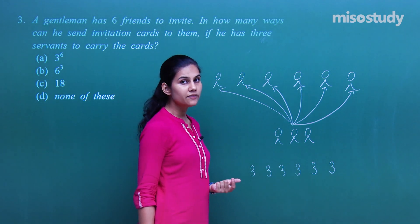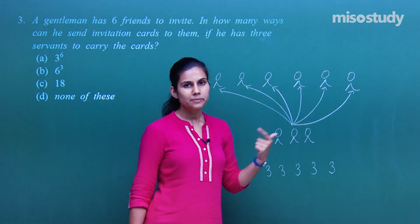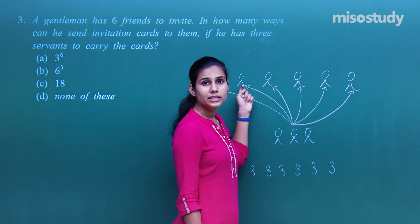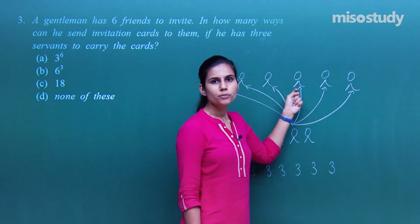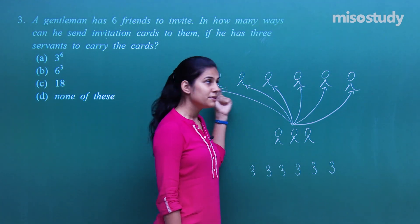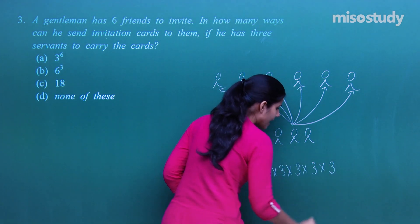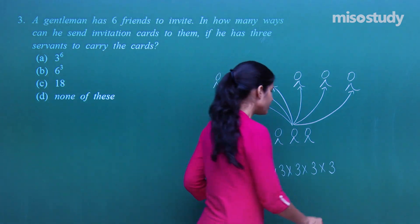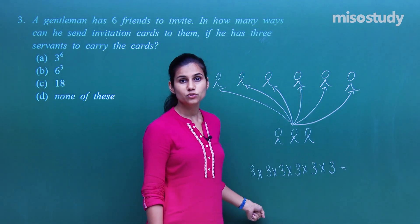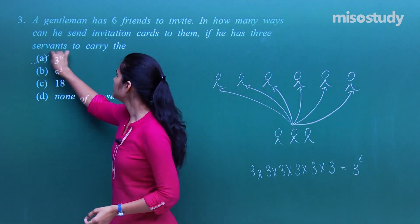All 6 tasks must be performed — give card to friend 1, then friend 2, and so on. Since all tasks need to be done, the multiplication rule applies: 3 × 3 × 3 × 3 × 3 × 3 = 3⁶. So the answer is 3⁶.